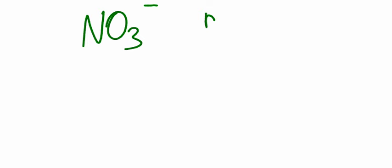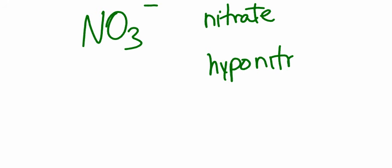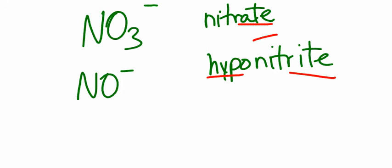That's nitrate. Now if I wanted to go to nitrite, I would simply remove one oxygen. But I want to form hyponitrite. In this case, I would have to remove two oxygens, so it would be NO-. Remember, to go from here to here, I need to lose two oxygen atoms off of the ion.